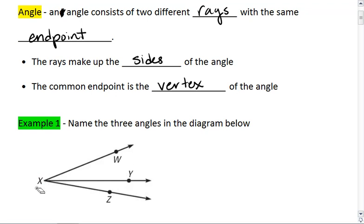So one of the angles here is angle, and we use this symbol, W, X, Y, which is formed by ray XW and ray XY.